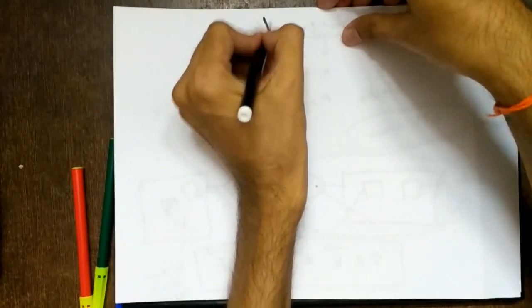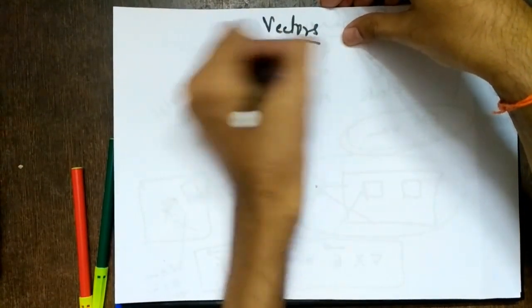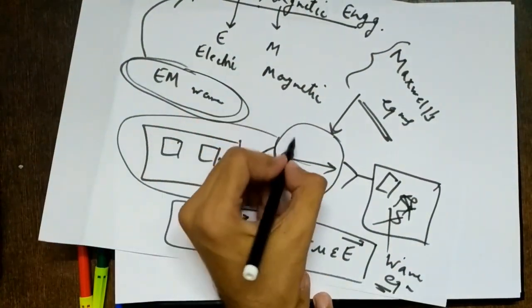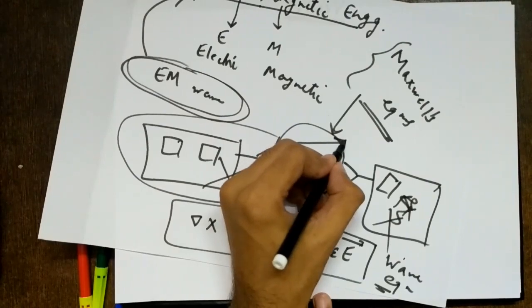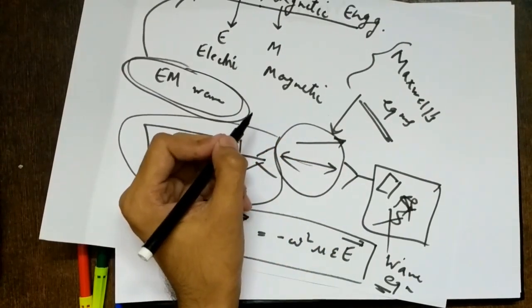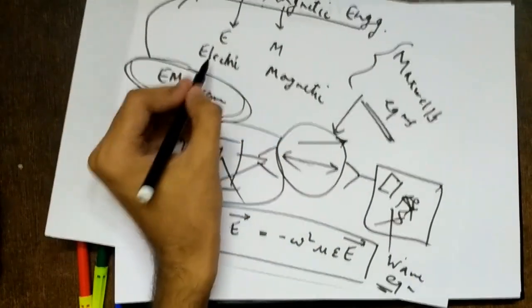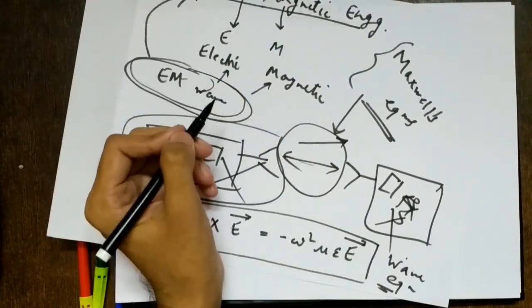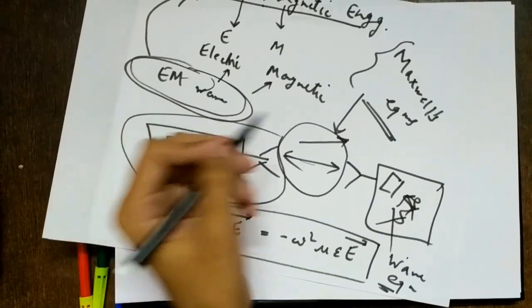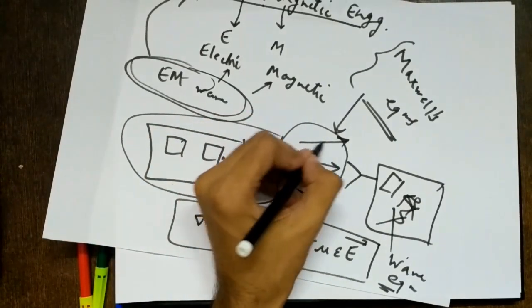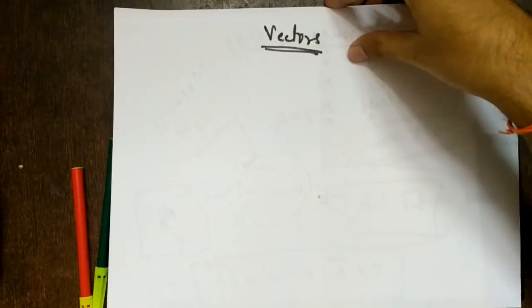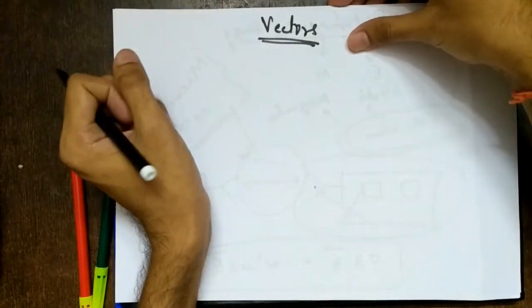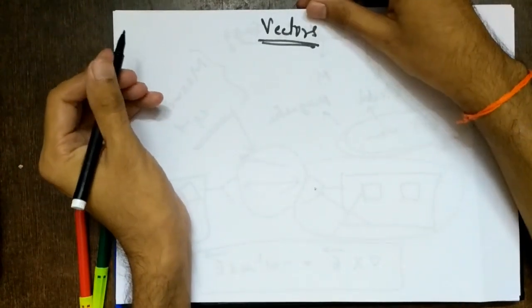Before actually starting the course, there is one basic requirement: vectors. Vectors are important because this subject will be concerned with waves going in some direction with some magnitude. An electromagnetic wave is a combination of electric field and magnetic field, which is what we are mainly going to learn, and these will obviously have some amplitude and direction. So vectors are essential. This lecture is a quick introduction to the subject and to vectors.